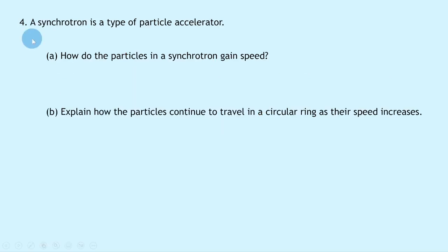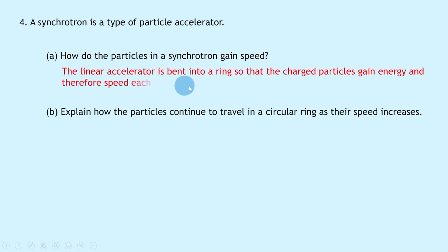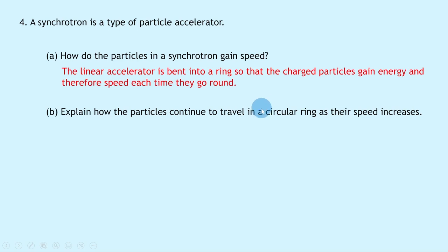Question four says a synchrotron is a type of particle accelerator. Part (a) asks how the particles in a synchrotron gain speed. The linear accelerator is bent into a ring so that the charged particles gain energy and therefore speed each time they go round.